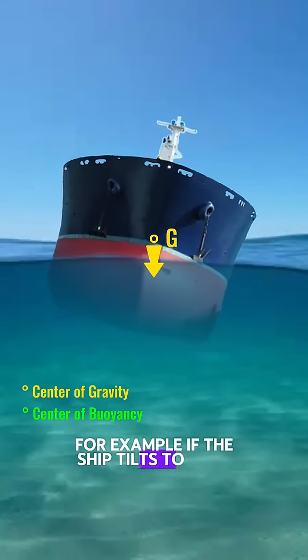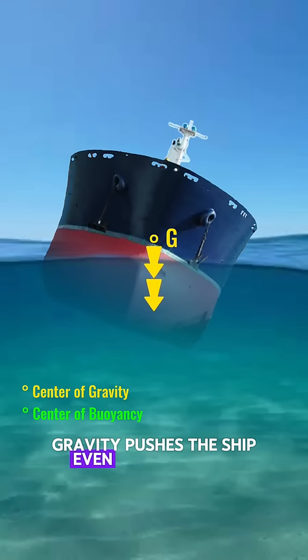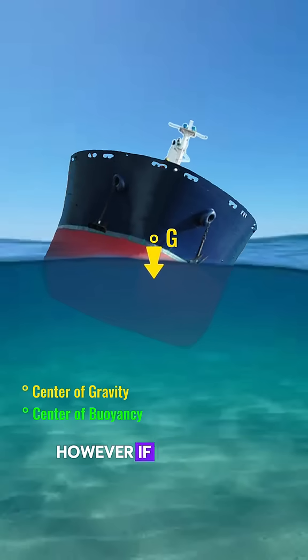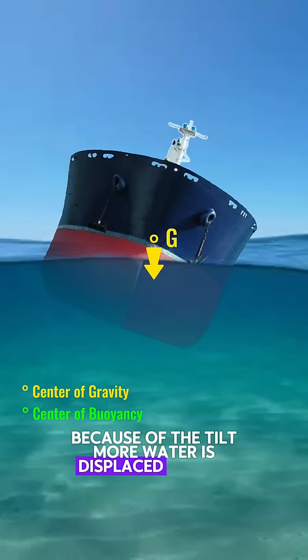For example, if the ship tilts to port, gravity pushes the ship even more to port. However, if you notice, because of the tilt, more water is displaced in port.